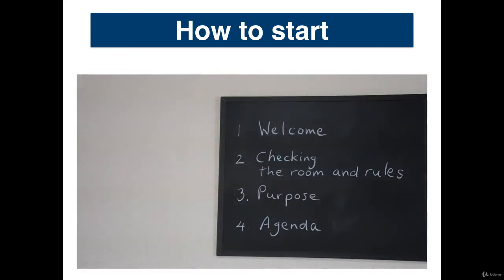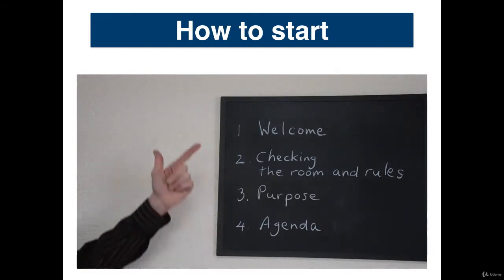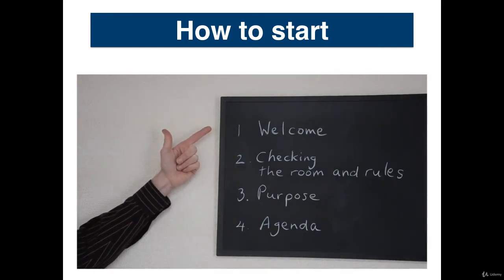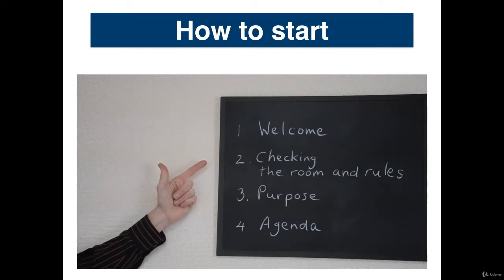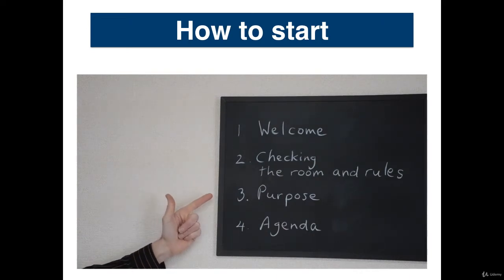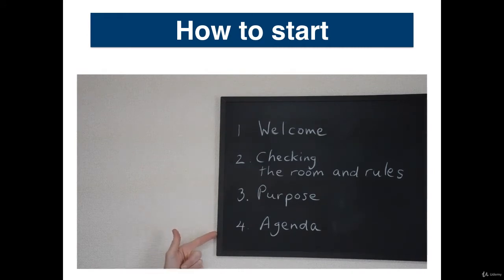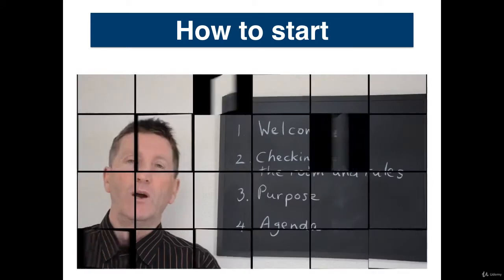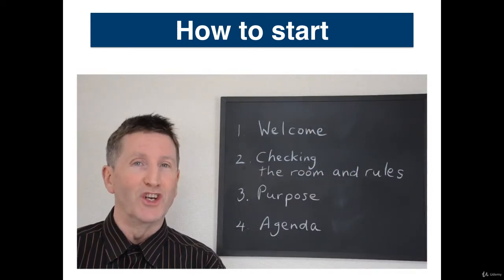There are four parts to starting a meeting. The first part is to welcome the participants. Secondly, to check the room, perhaps for any special seating arrangements or any special rules for the meeting. Thirdly, to confirm the purpose of the meeting. And finally, to focus on the agenda. We will look at each of these in turn.